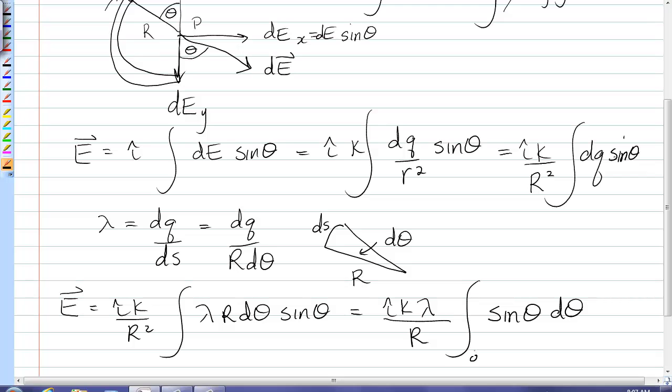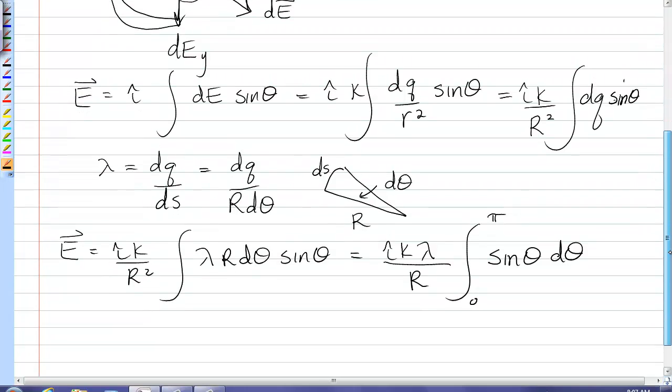My limits of integration are 0 to pi and that's why I chose theta where I did so that I have simple limits of integration. Integrating sine theta is negative cos theta. Evaluating that from 0 to pi simply gives me 2. And so I pick up a 2 i hat k lambda over R.